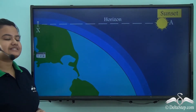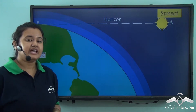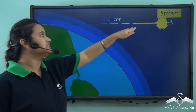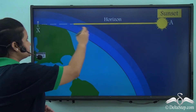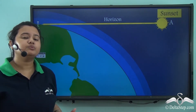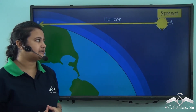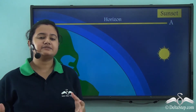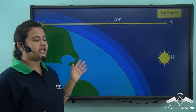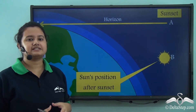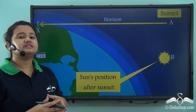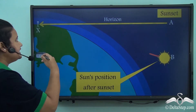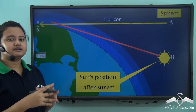Imagine an observer is standing at position X on the earth's surface. It is the time of sunset and the sun is at position A, where it is parallel to the horizon. The sun rays reach the earth's surface directly and illuminate the sky with bright light. Now suppose the sun shifts further downwards to position B. At this position, the observer will not be able to watch the sun as it has set down. At position B, the sun rays do not strike the earth's surface directly. Rather, they strike the layers of atmosphere just above the earth's surface.